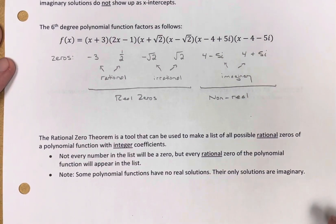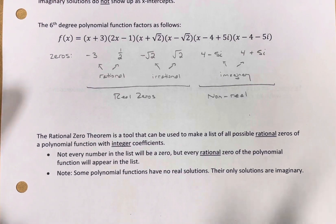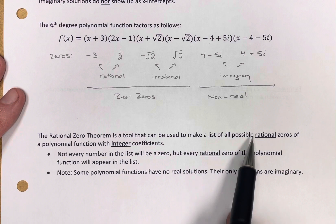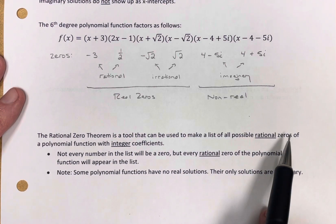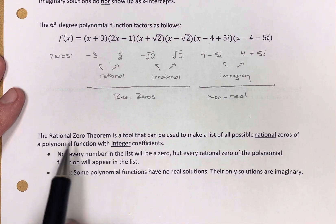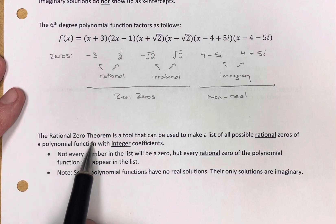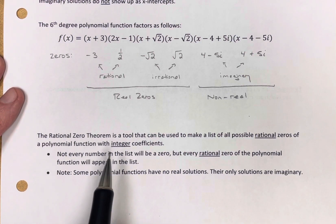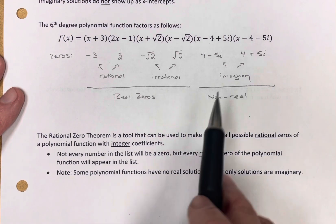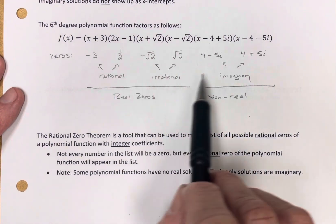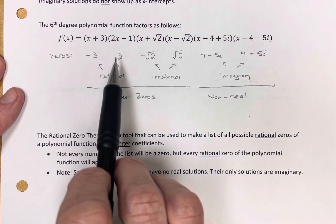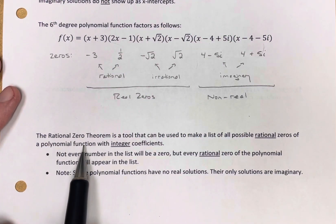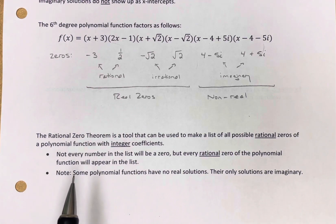So what is the rational zero theorem? It's a tool that can be used to make a list of all possible rational zeros of a polynomial, as long as the polynomial has coefficients that are all integers — it's kind of specific. So it doesn't help you with irrational zeros or imaginary zeros; it only helps you with the ones that are rational, and it requires that your polynomial functions have integer coefficients.